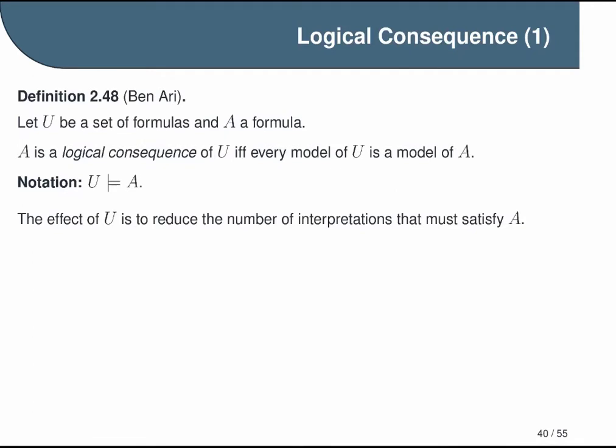The way that I like to suggest that people think about this relationship intuitively is that it's like we're saying that A can be thought of as a valid statement once we've already agreed to ignore all of the interpretations that don't satisfy our set of formulas in U. When we say A is valid in general, that means it's true for all interpretations. When we say it is a logical consequence of U, that means that it is satisfied by a potentially smaller set of interpretations, which is determined by U. So that's why I'm saying the effect of U is to reduce the number of interpretations that must satisfy A in order for this statement to be true. This is a bit abstract, so I think an example will help.